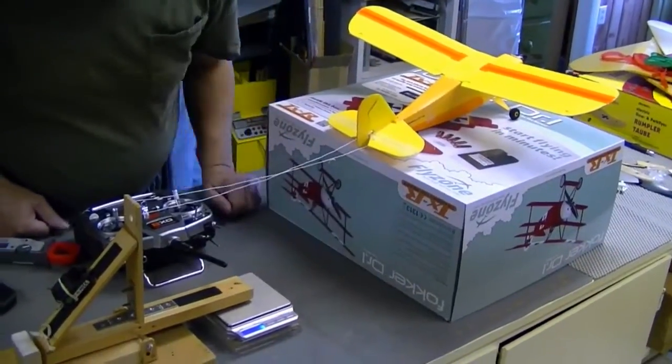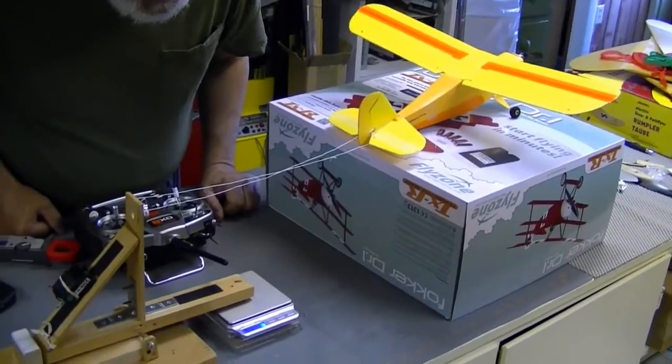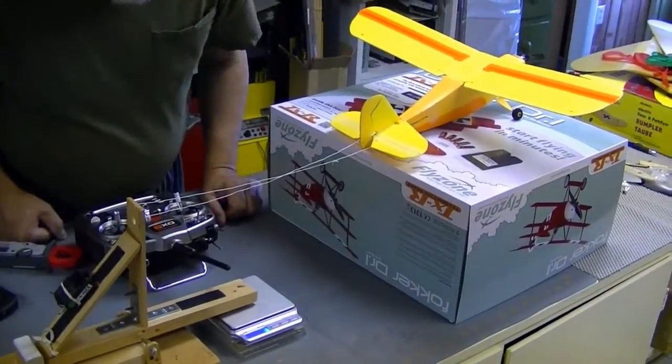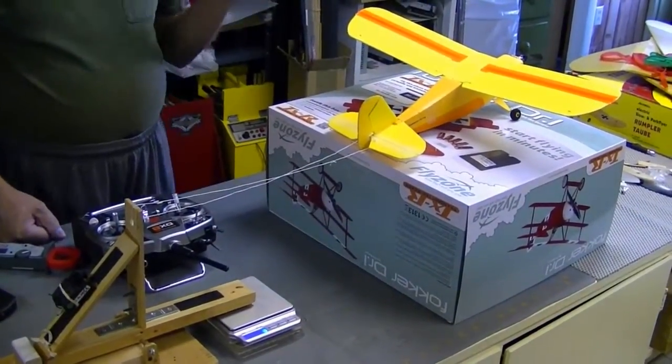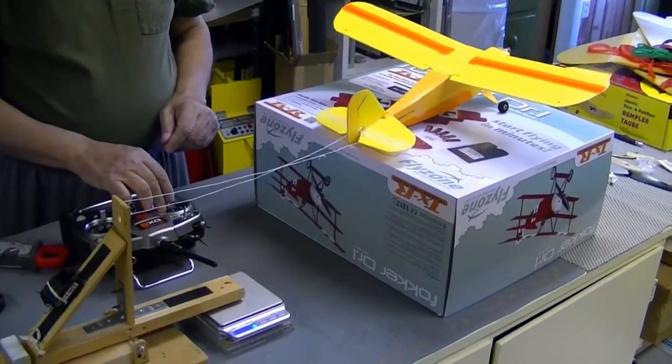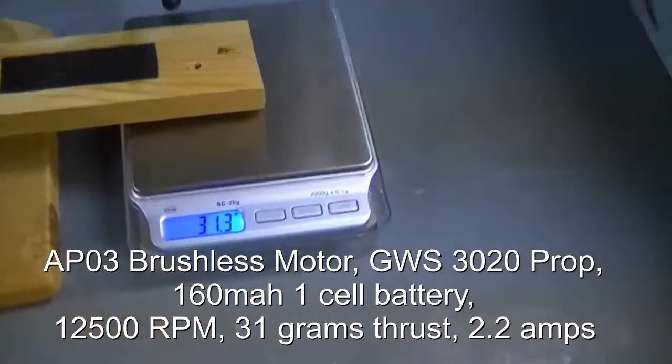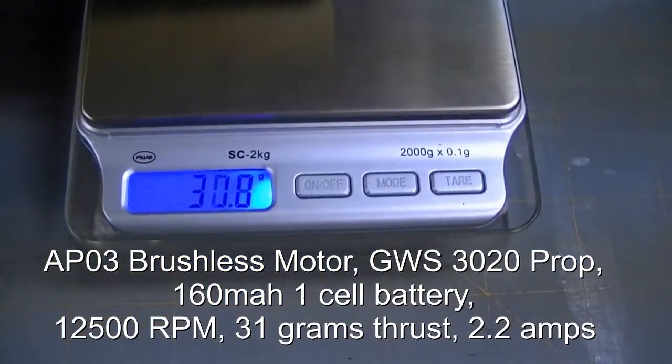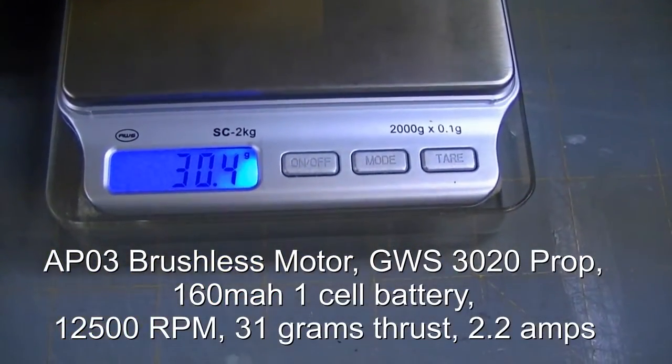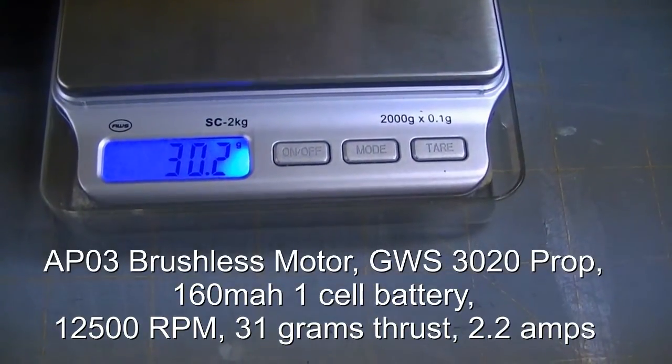Turn on the scale and let it initialize. I have no choice there. We're plugged in. Let's give it some throttle. We'll call that about 31 grams before the charge starts to taper off.